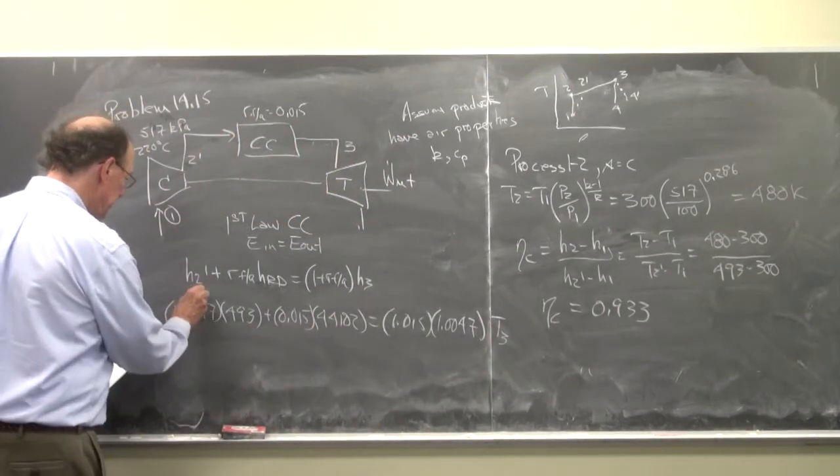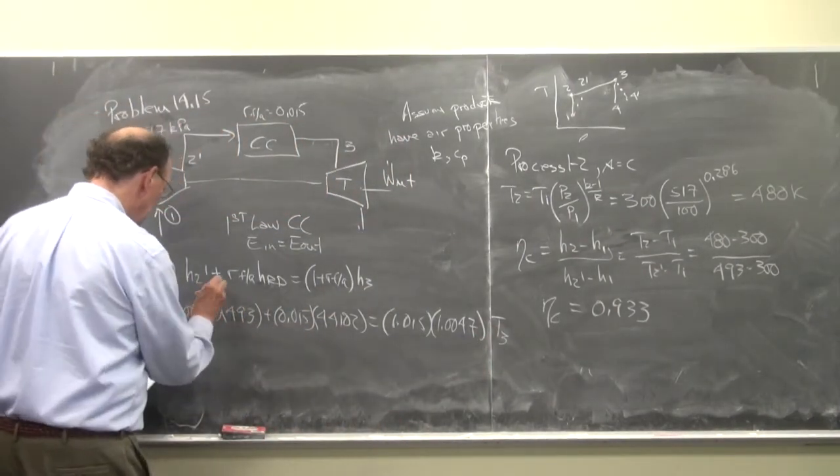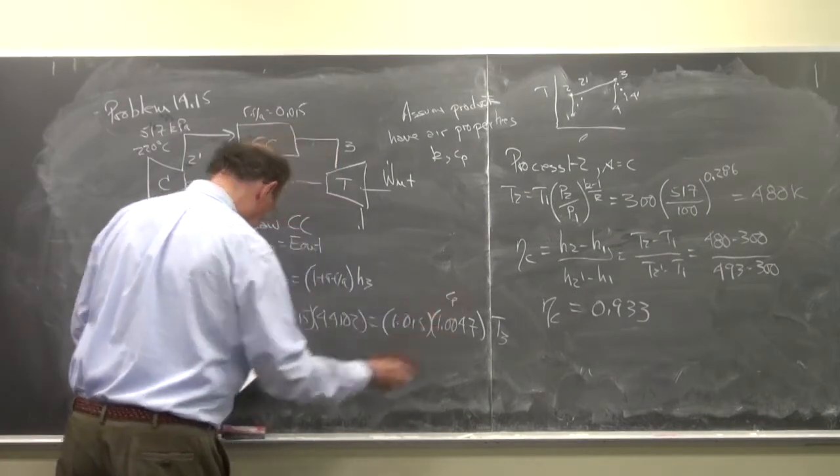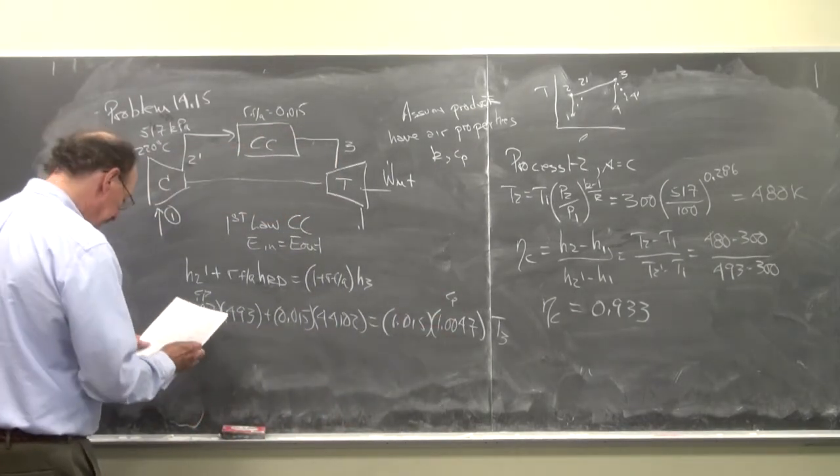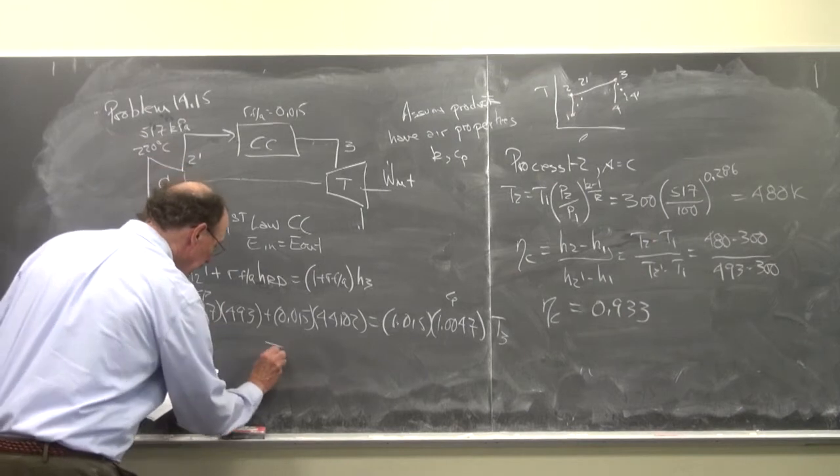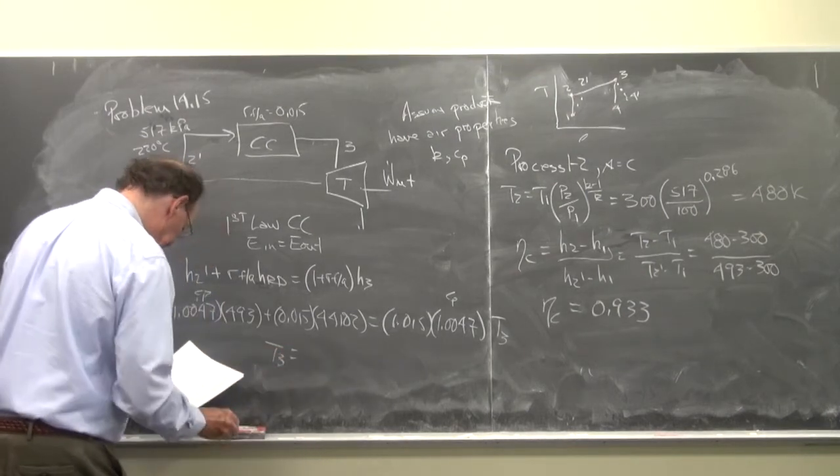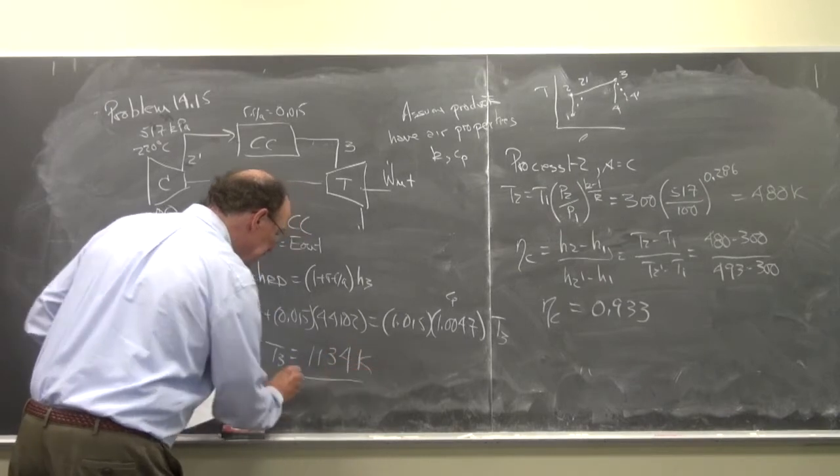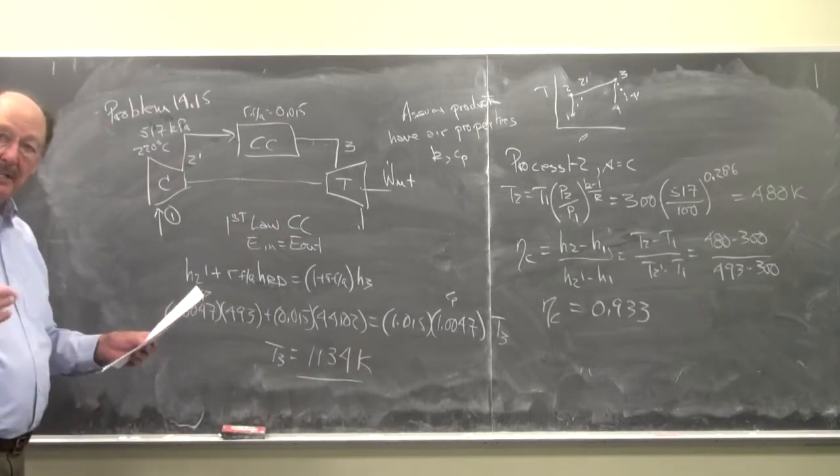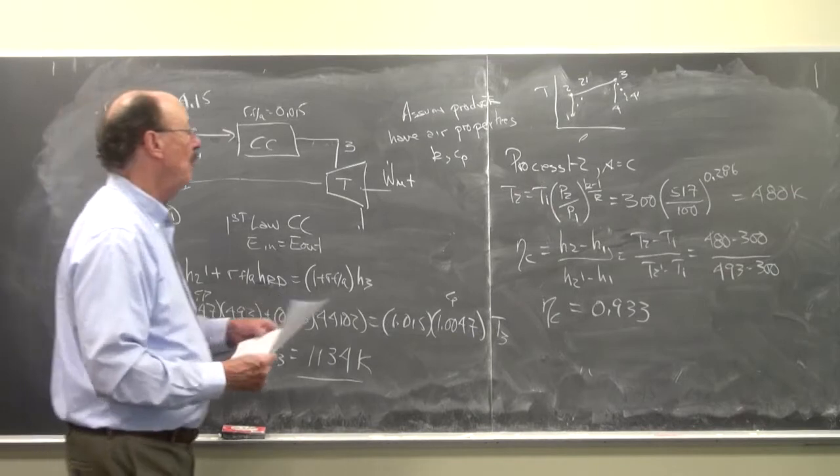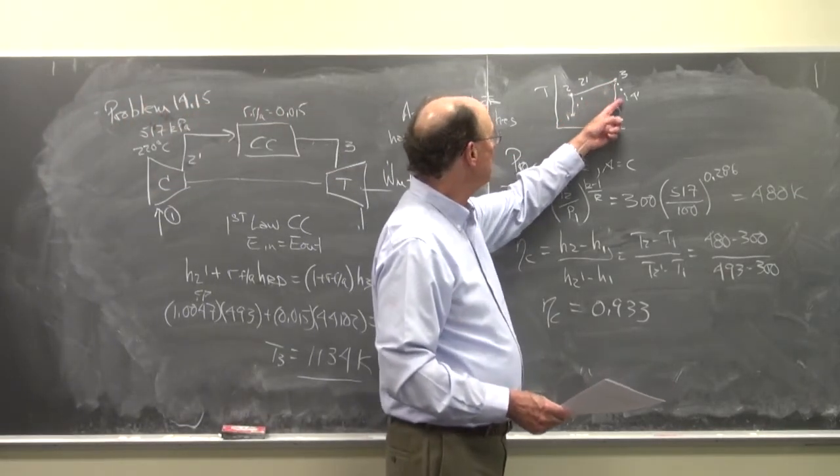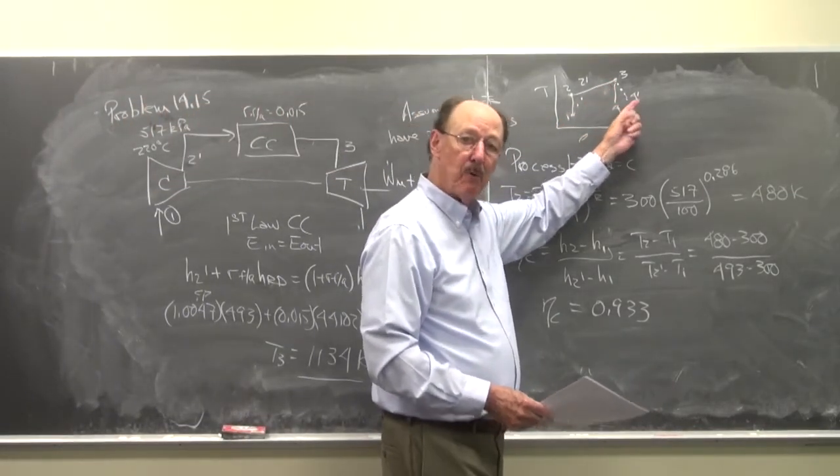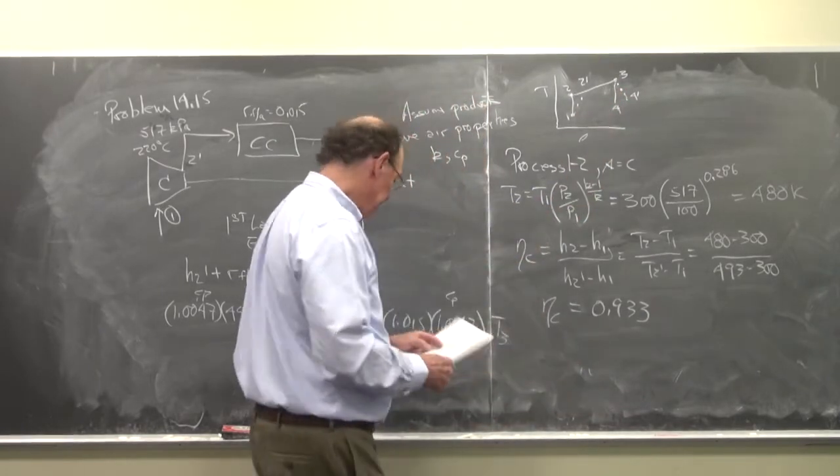And with this, we get that T3 is equal to 1134 degrees K. So I now know T3. And so I'll use the isentropic relationships to find T4. I know T4 prime. I can find the turbine efficiency.